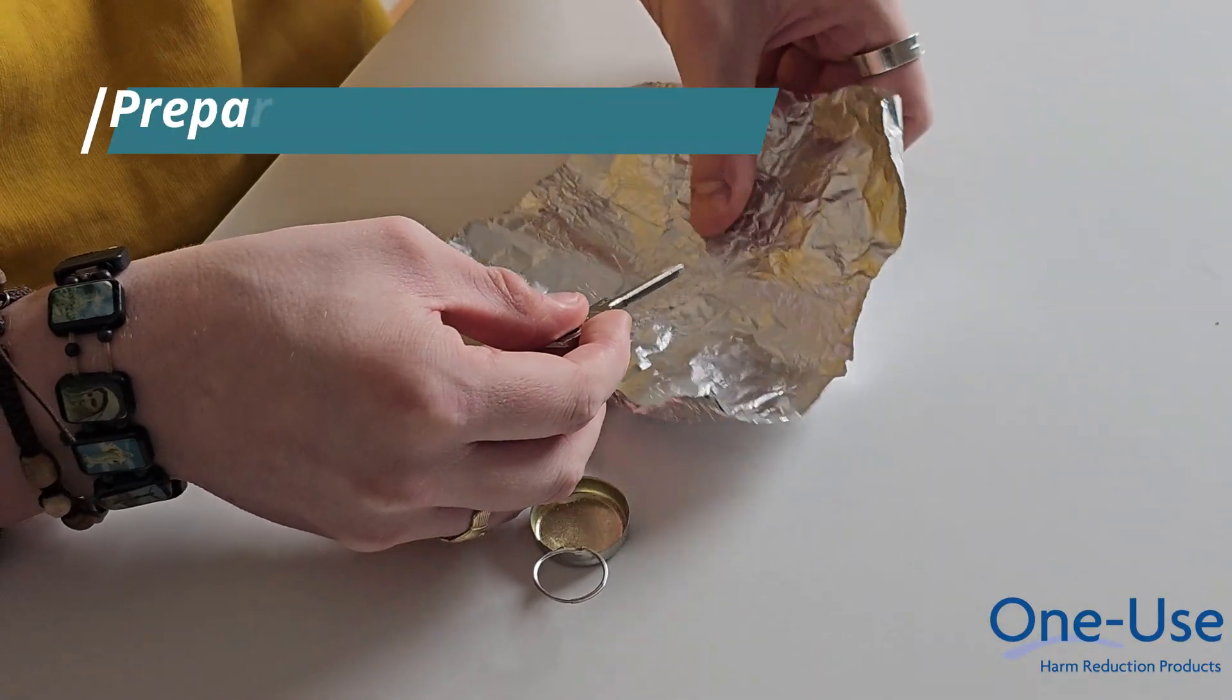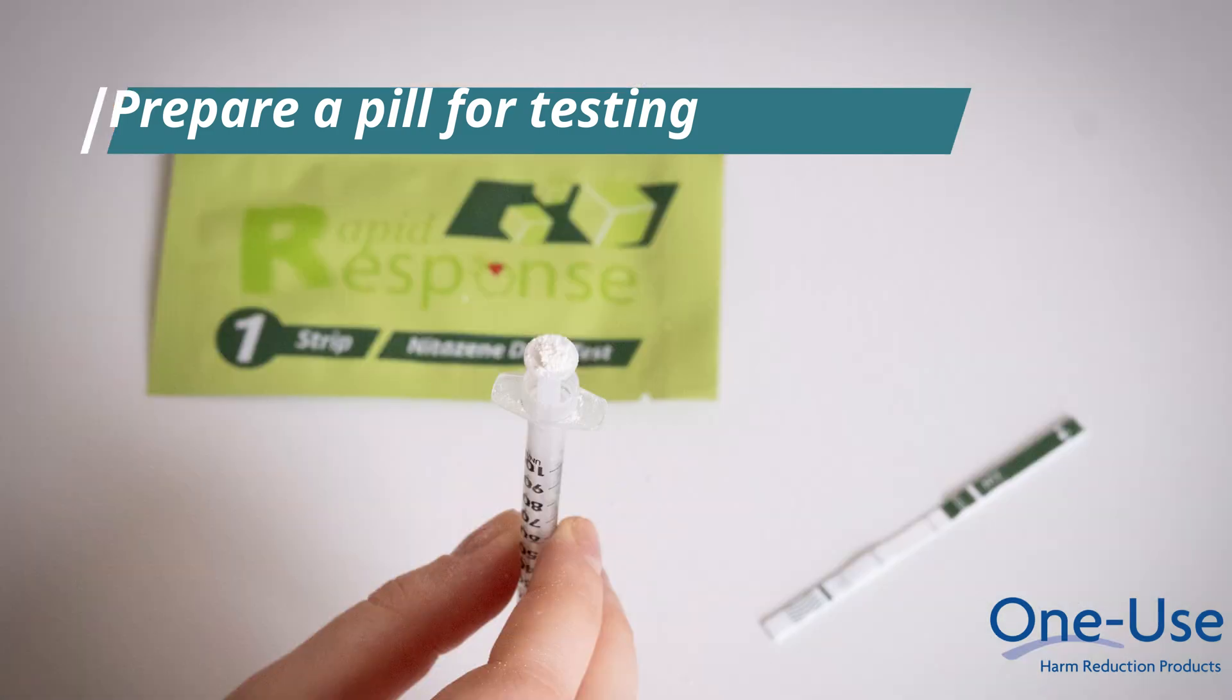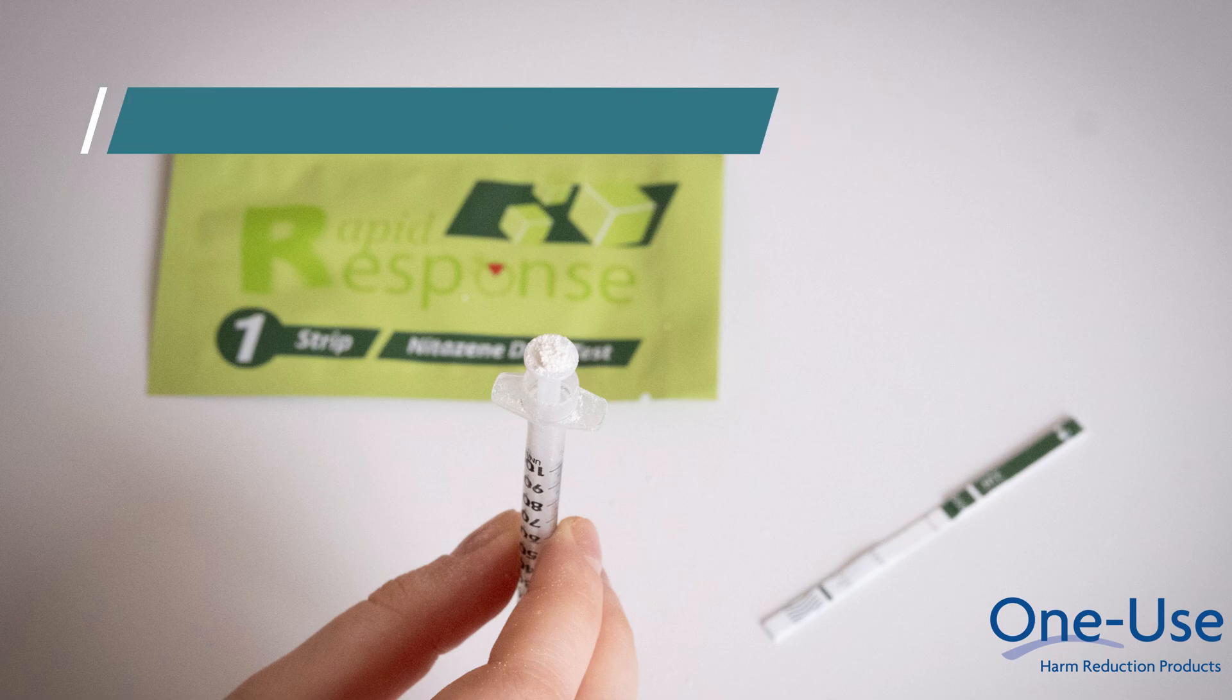Remove some of the powder using something like a tip of a key to scoop out the powder. You will need 10 mg of fine powder. For a visual reference, 10 mg is enough of the drug to cover the top of a syringe barrel.